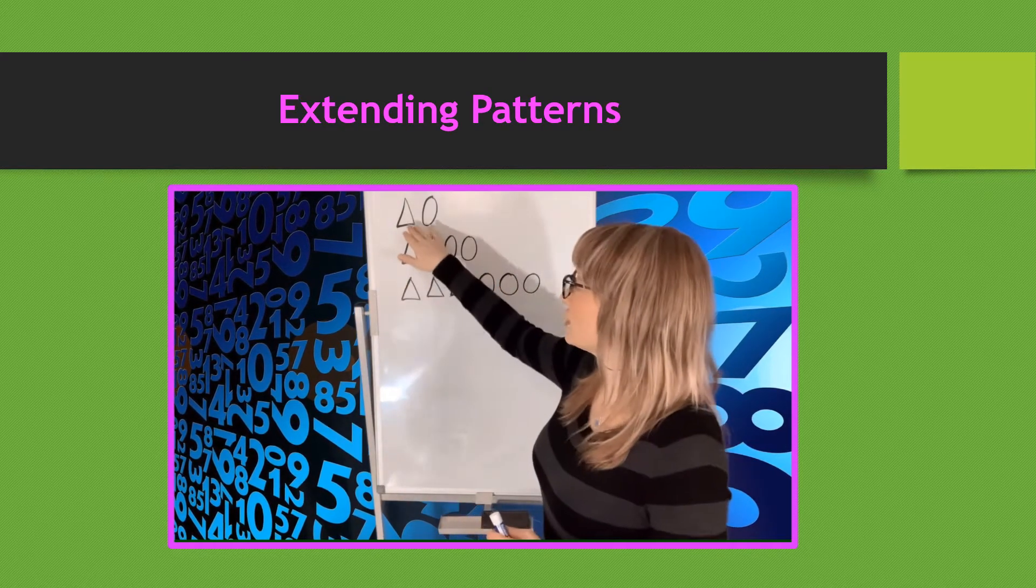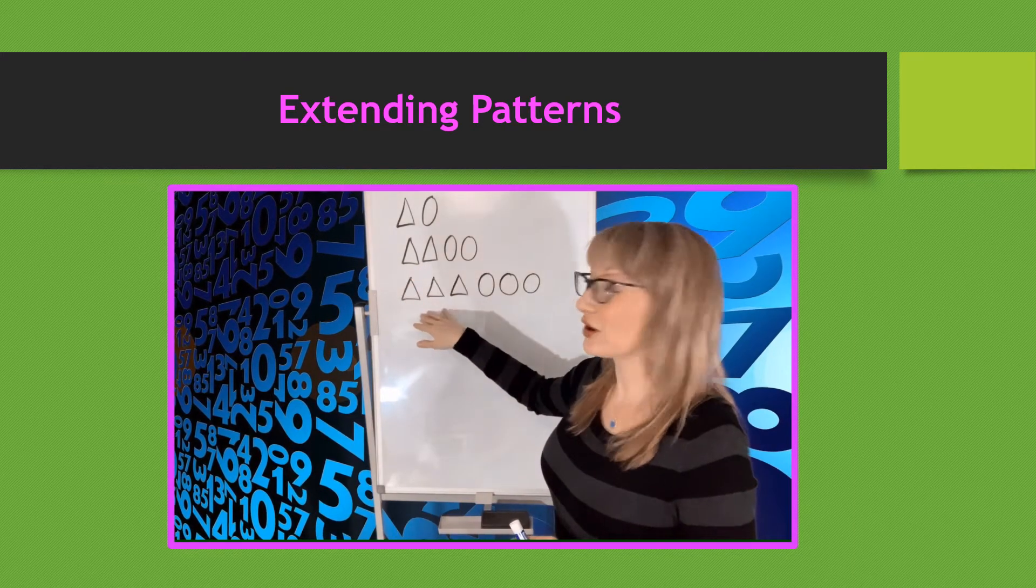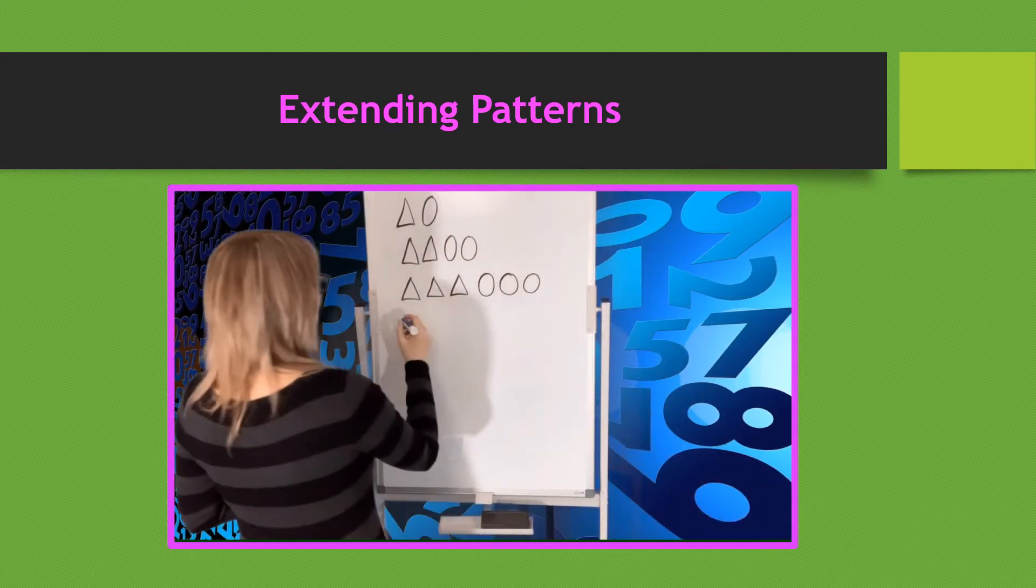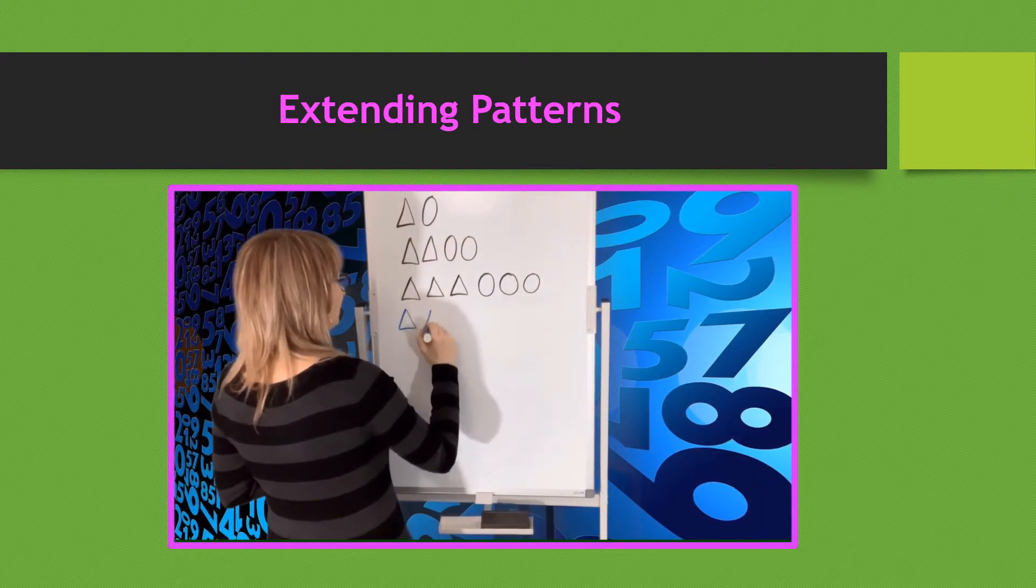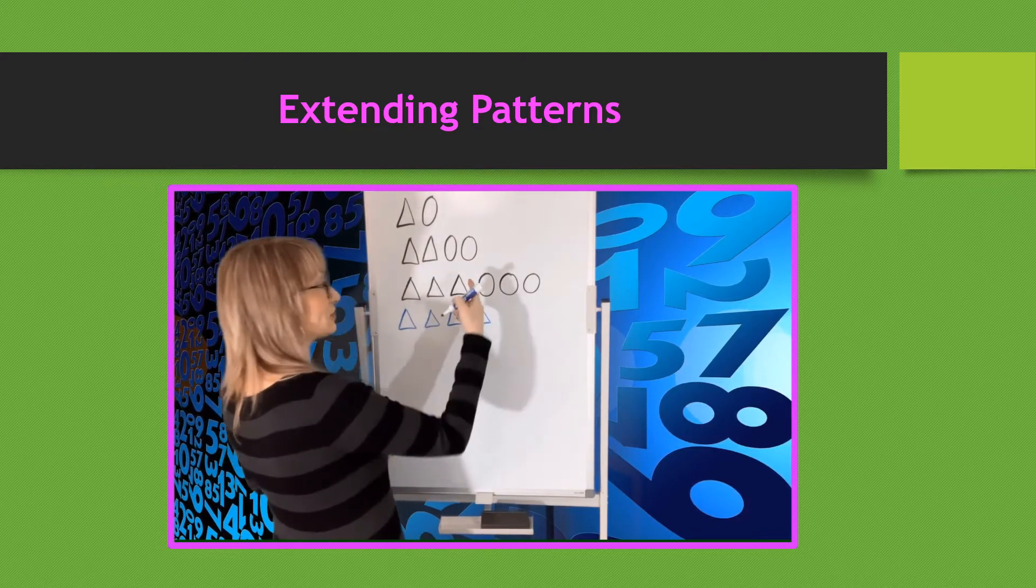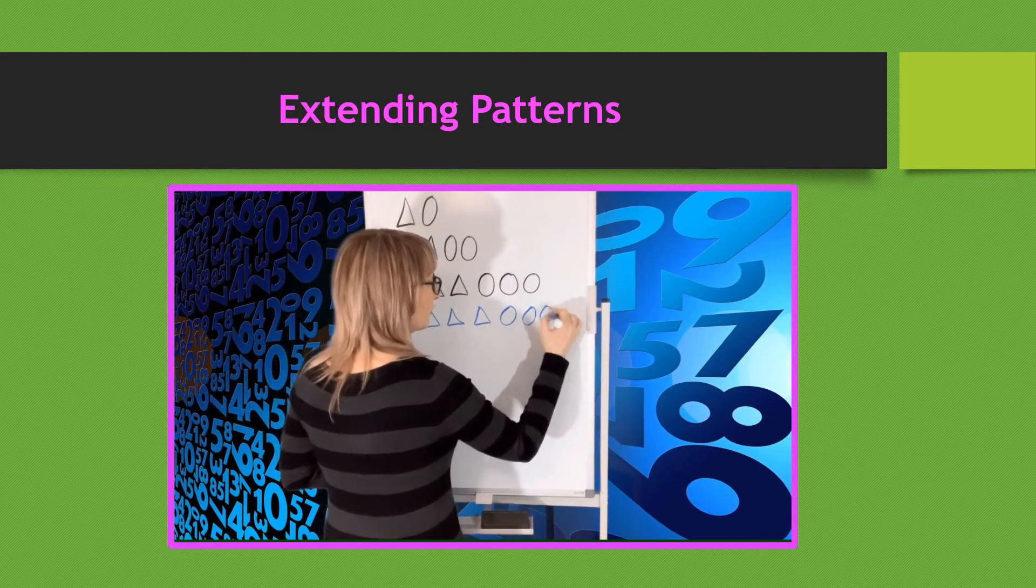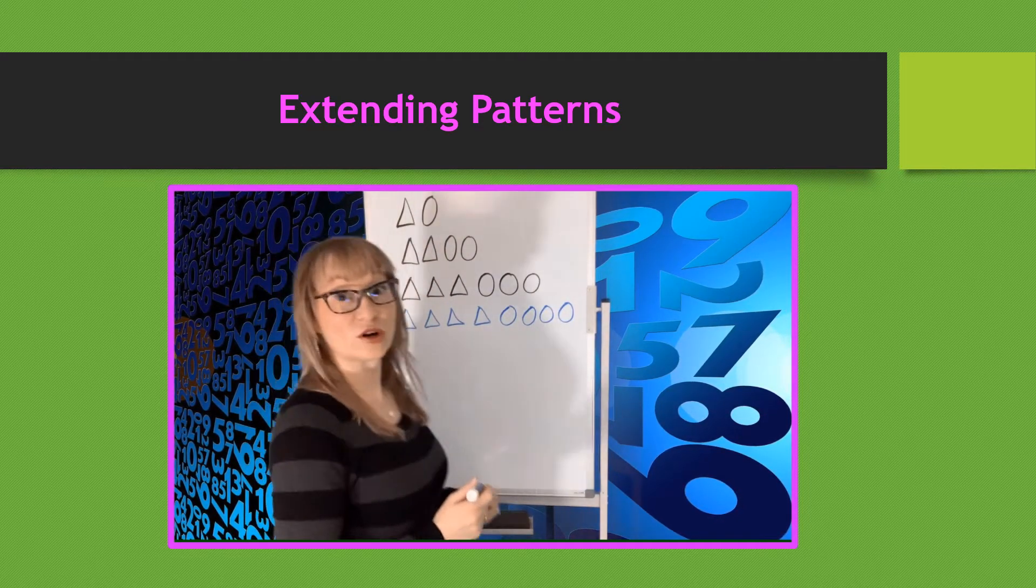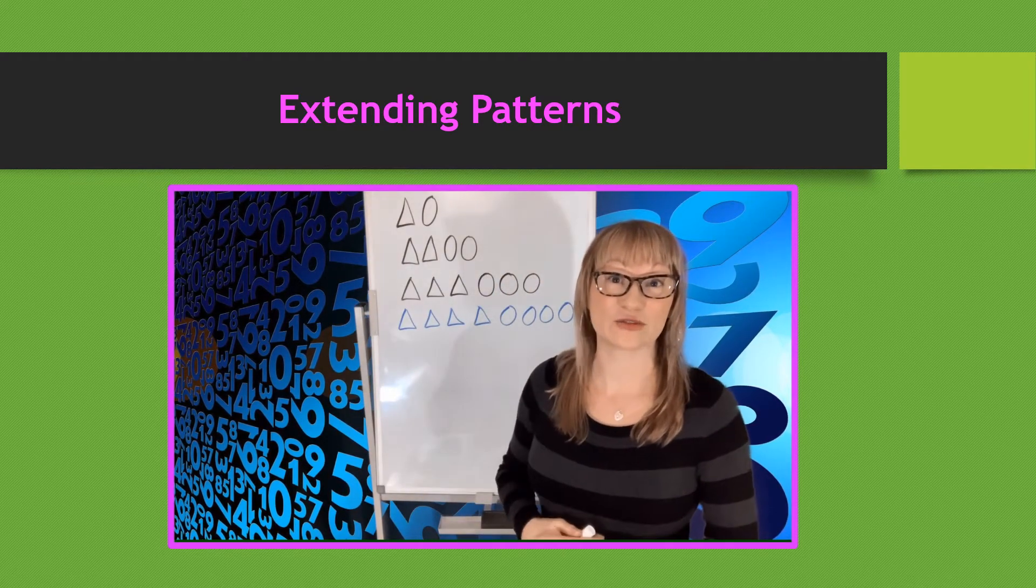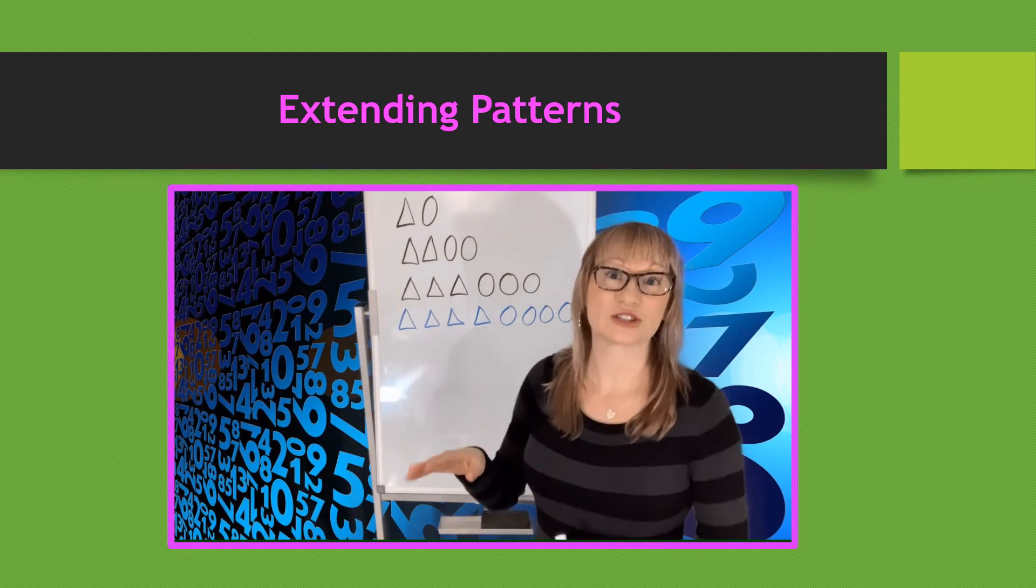We're starting out with one triangle, one circle, two triangles, two circles, three triangles, three circles. If I'm going to extend the pattern, the next one would have four triangles and one circle, two circles, three circles - I need four circles: one, two, three, four. If I were to continue to grow this pattern further, I would have to do five and five, six and six, and so on.